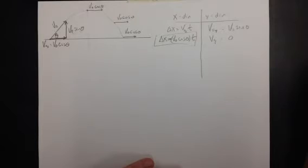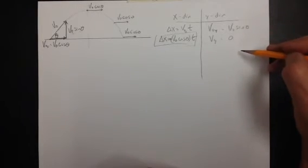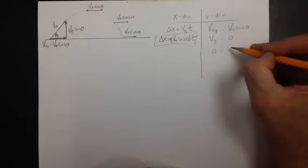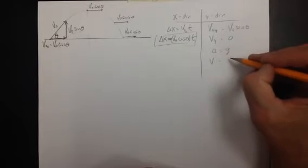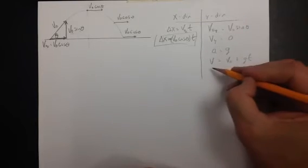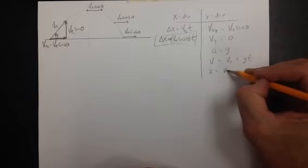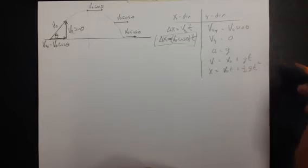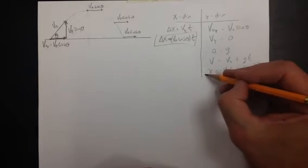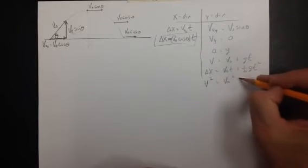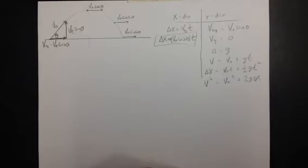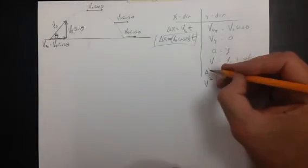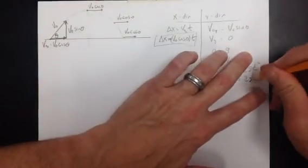This is only half the trip, but it allows us to figure some things out. In the Y direction, the acceleration is the acceleration of gravity, or negative 10 meters per second squared. We also have these kinematic models: V equals V-naught plus AT; displacement equals V-naught times T plus one-half A T squared; and V squared equals V-naught squared plus 2A times displacement. Since we're talking about the Y direction, we'll change those X's to Y's — we're talking about motion up and down now.